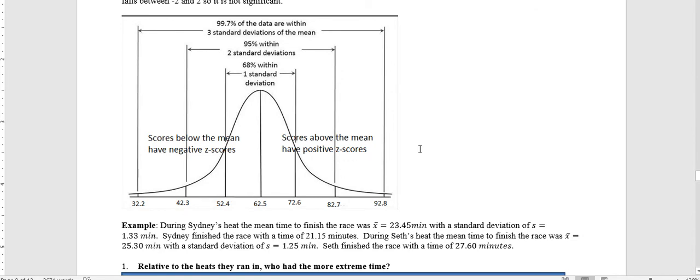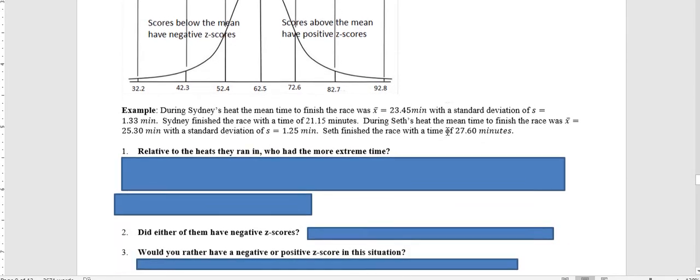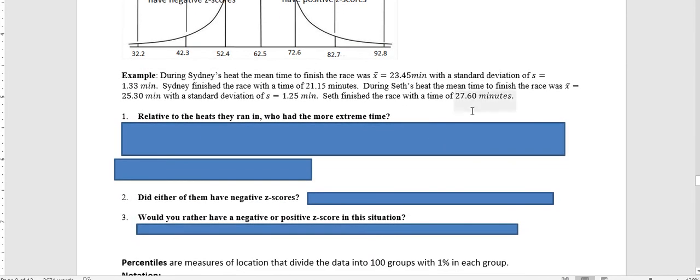For the next one, during Sydney's heat, the mean time to finish the race was 23.45 minutes and the standard deviation was 1.33 minutes. She finished the race in 21.15 minutes. During Seth's heat, the mean time to finish the race was 25.30 minutes and had a standard deviation of 1.25 minutes.